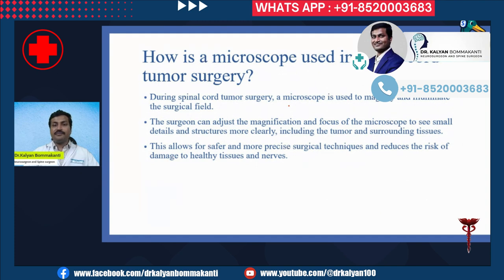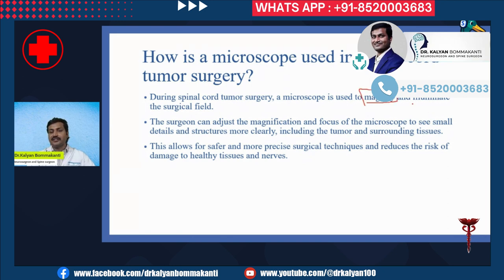How is a microscope used in spinal cord tumor surgery? A microscope mainly performs two functions: it magnifies and illuminates the surgical field. With the help of magnification, the surgeon can adjust the magnification and focus of the microscope to see small details and structures more clearly, including the tumor and the surrounding tissues. This allows for safer and more precise surgical techniques and reduces the risk of damage to healthy tissues and nerves.